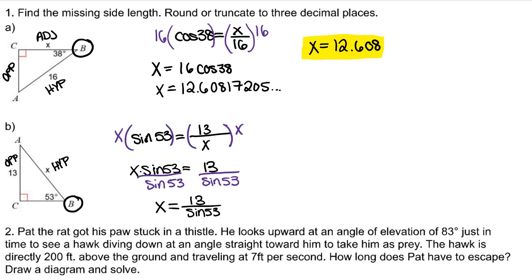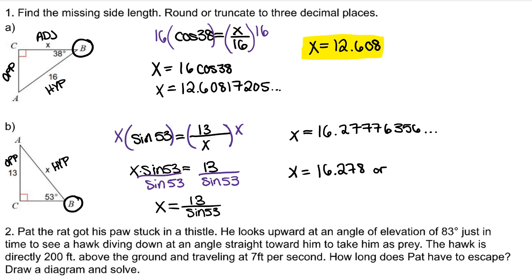Plugging it into a calculator, that would be x equals 16.2777... If we rounded that, we would have 16.278. If we truncated, we would simply cut it off after the third decimal without even looking at the fourth decimal, so 16.277. Both would be acceptable answers on a test.